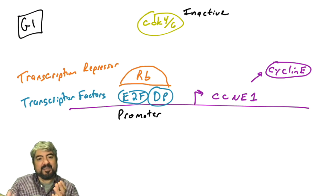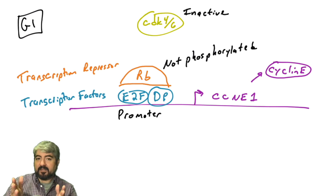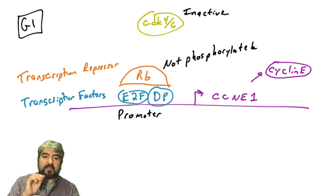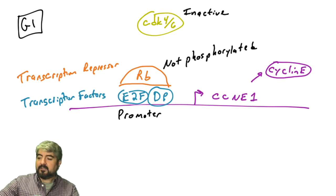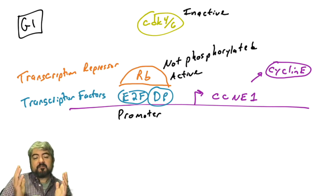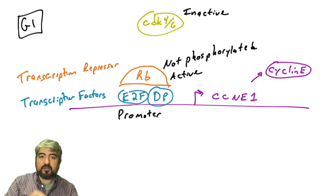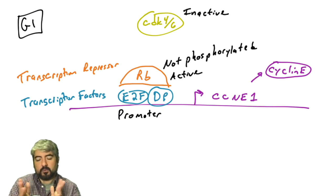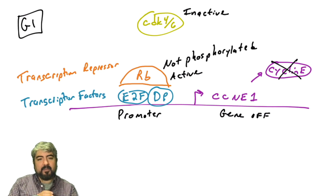If CDK4 and 6 are inactive, then RB is not being phosphorylated. The substrate for CDK4 and 6 is RB — it will phosphorylate RB, but not in this situation because cyclin D is not present. If RB is not phosphorylated, it is in an active state. RB is a transcriptional repressor, and when it is active, it is actively repressing transcription of cyclin E. So the cyclin E gene is not transcribed, cyclin E protein is not made, and levels are low.